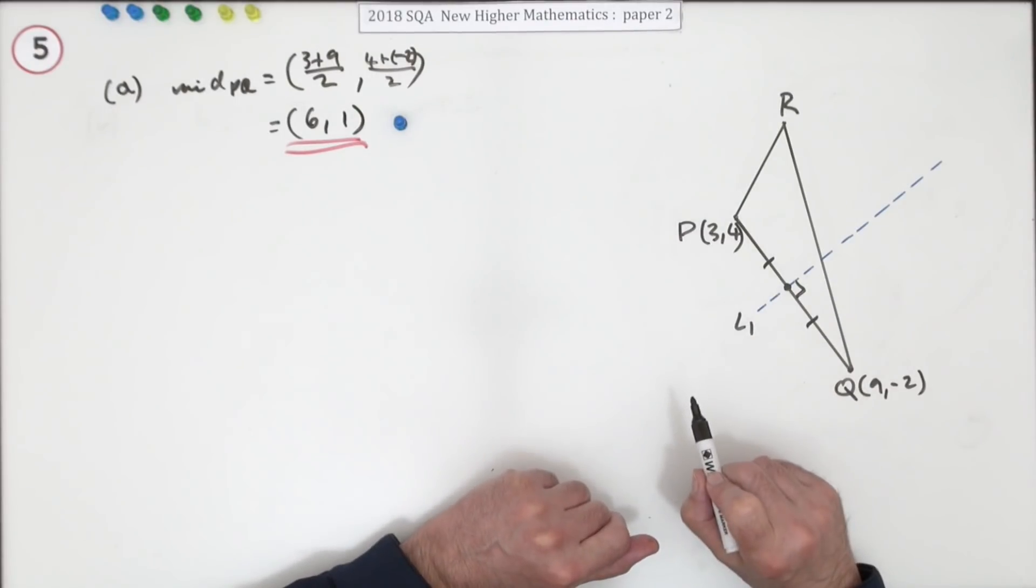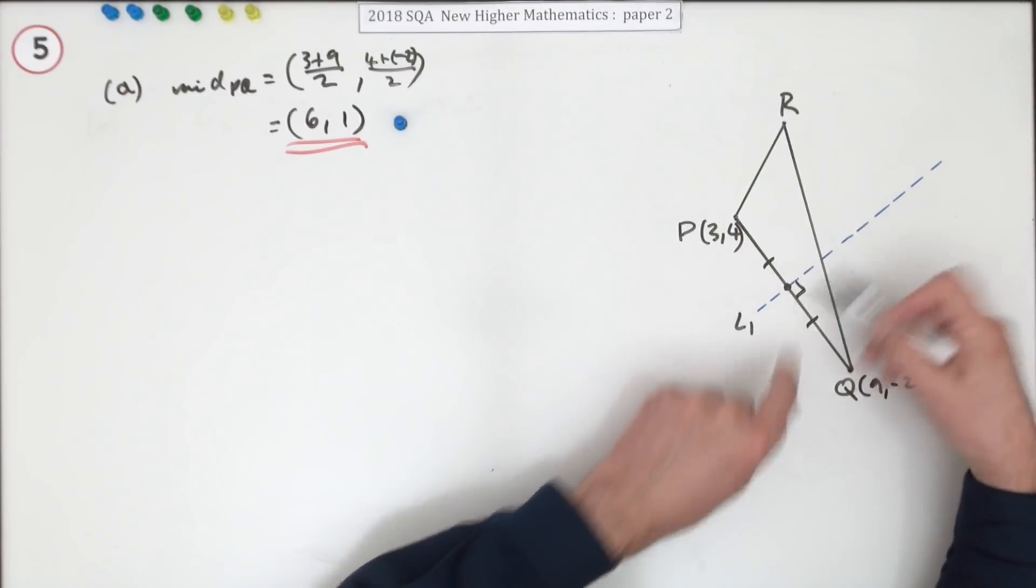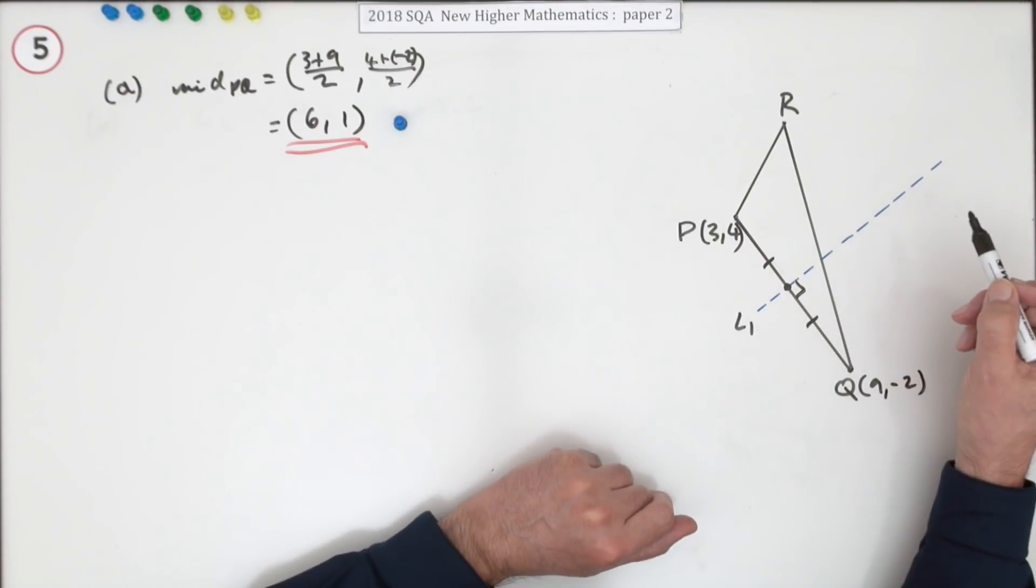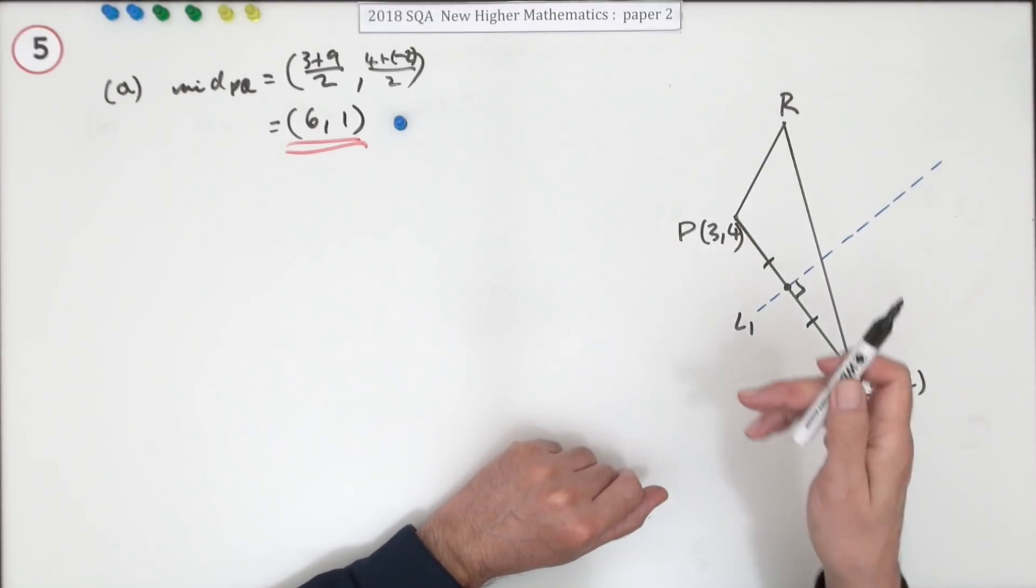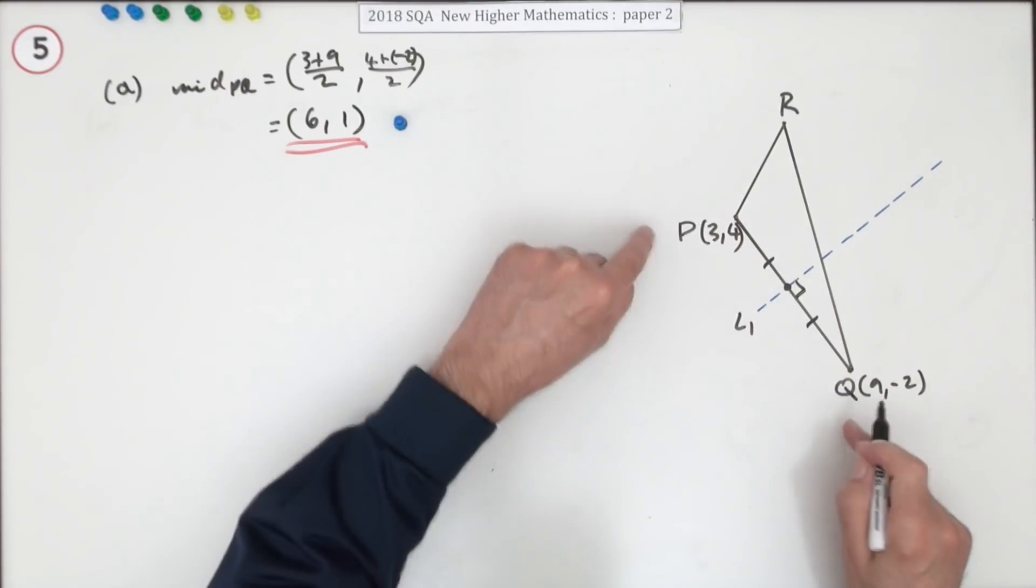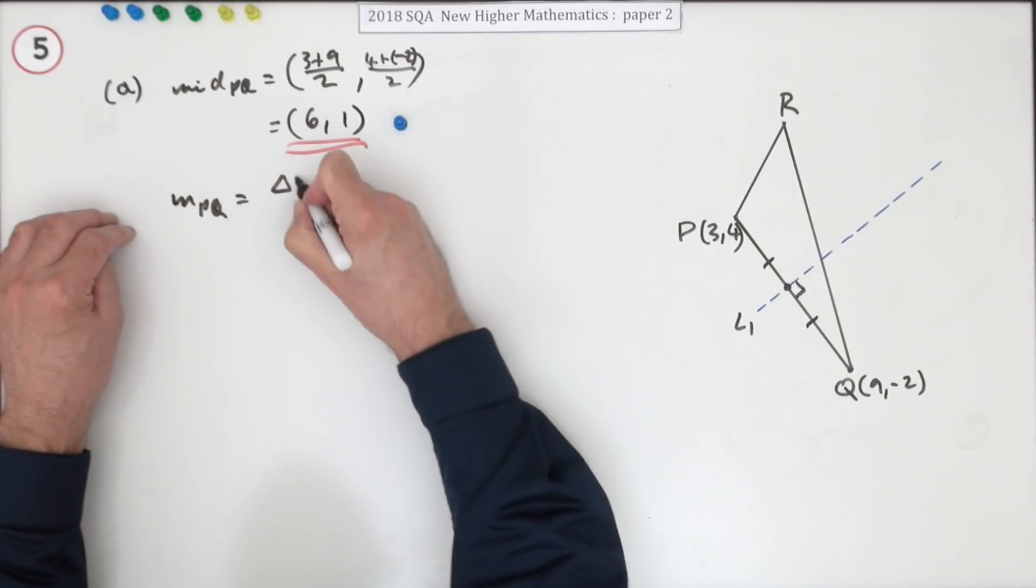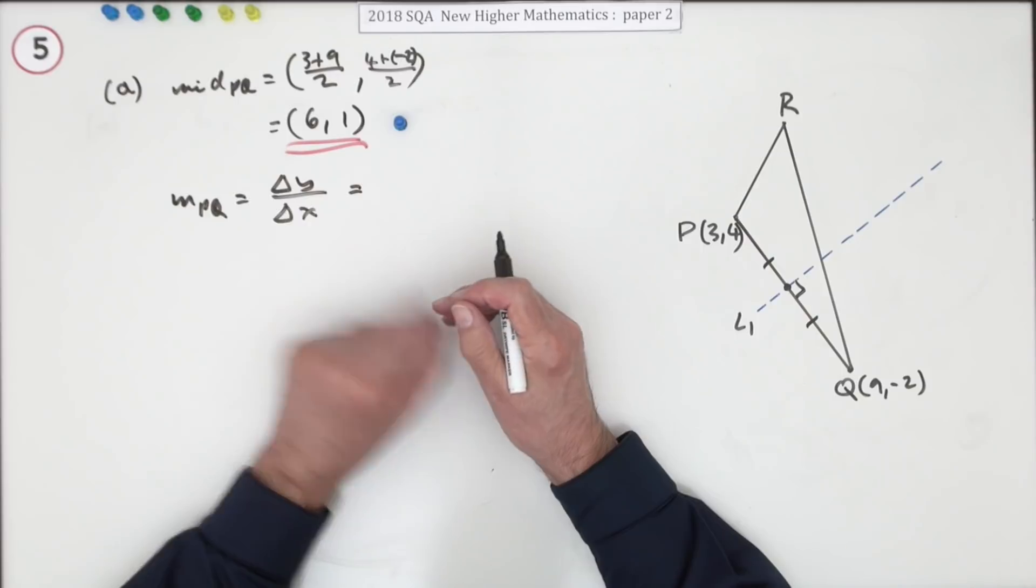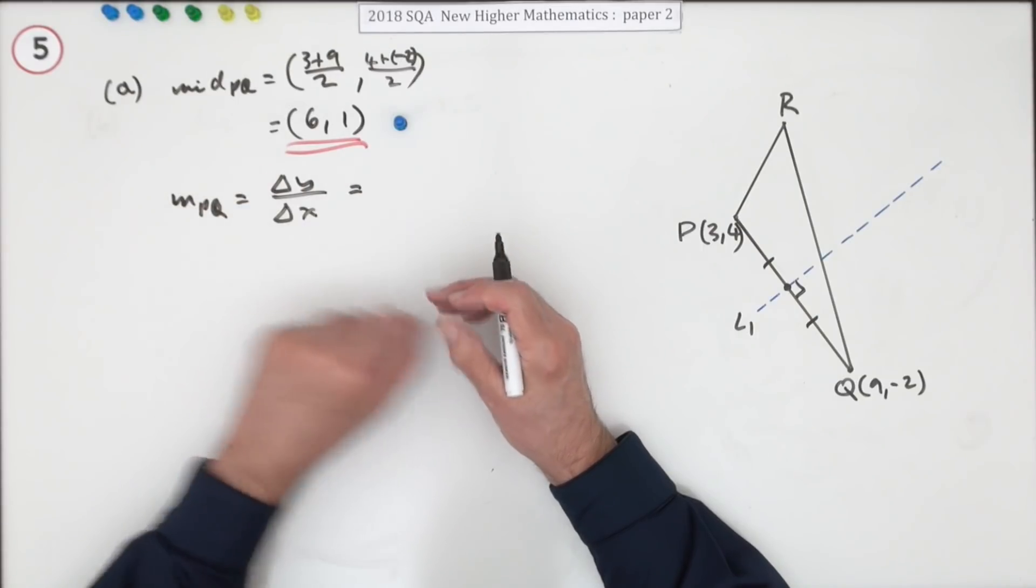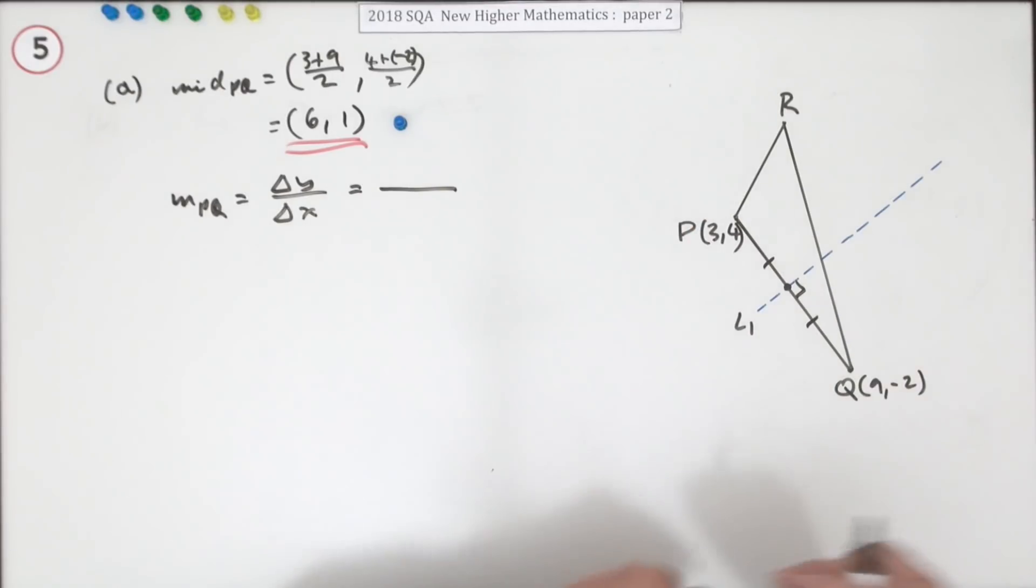Now you need its gradient. Well you only know one point in the line so I can't use that y2 minus y1 business. So you'll have to reference it to some line you do know, a line that's either parallel or perpendicular. Well you know the perpendicular one. Get the gradient of PQ. Gradient of PQ will be the difference in the y coordinates over the difference in the x coordinates. Or because it's only the one mark you can just go straight in with the numbers.